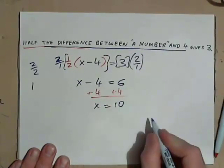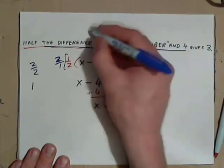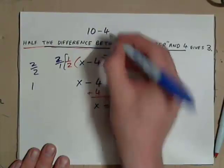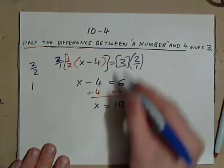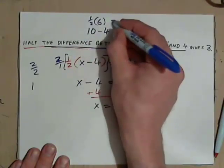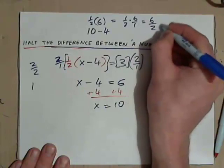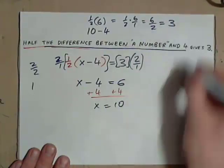Half the difference between a number and 4 gives 3. The difference between a number and 4, 10 minus 4. We're checking to see if 10 works. It's 6. Half of that, half of 6, of course, is 1 half times 6 over 1, which is 6 over 2, and that's 3. And that works.